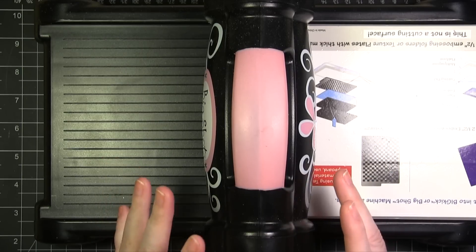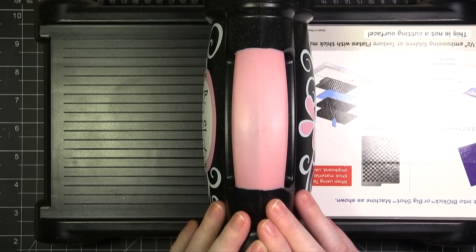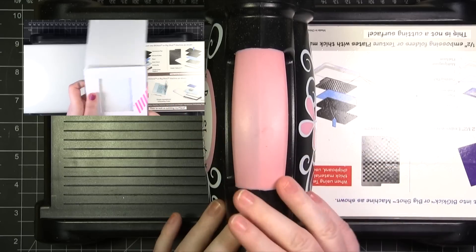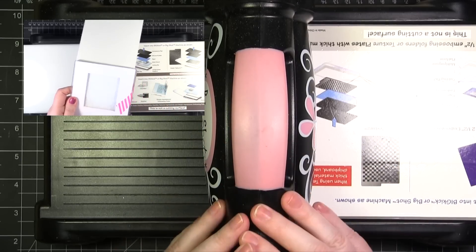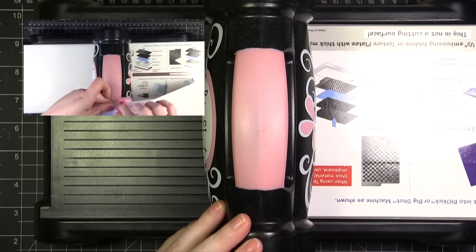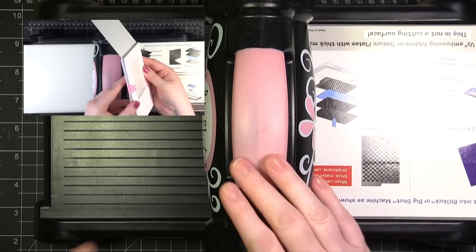I've shown you some selective embossing in the past where you create your own diffuser. I'll link to that up here in the corner. But this one's going to be a little bit different in that it's very simple and you don't need to create anything extra like a diffuser.